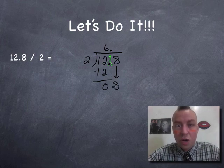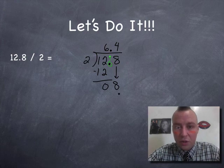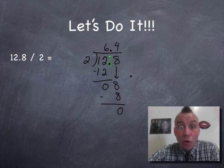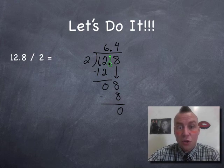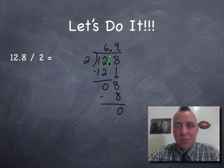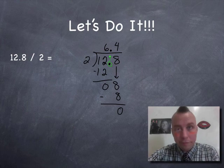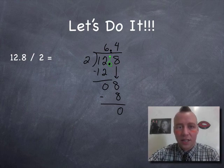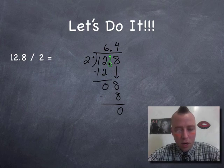We're going to say how many times does 2 go into 8? It goes in 4 times. And we know that because 4 times 2 is 8 and 8 minus 8 is zero. This was an easy one. There's no remainder. So the answer to 12.8 divided by 2 is 6.4. And if you want to check it, you say 6.4 times 2 equals 12.8. So that's our answer. 6.4. All right, let's do another one.